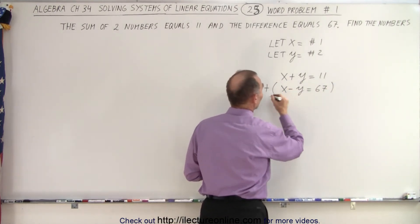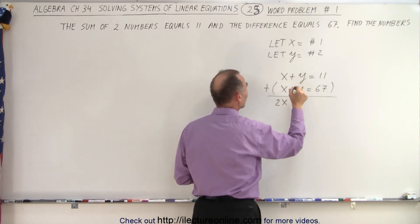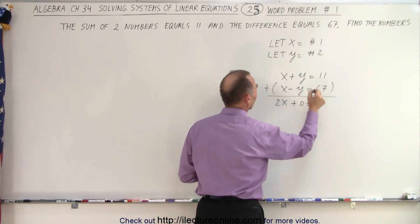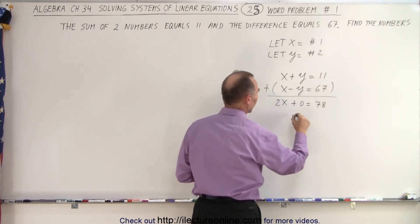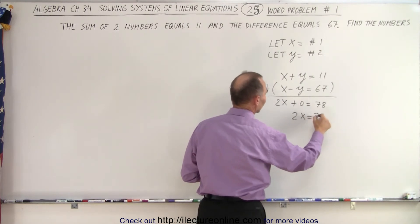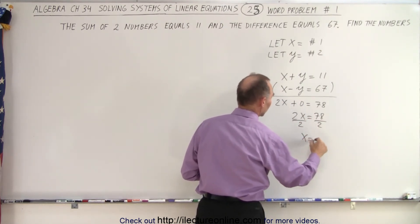x plus x is 2x, y minus y is 0, and 11 plus 67 is 78. So we end up with 2x equals 78, divide both sides by 2, and x equals 39.